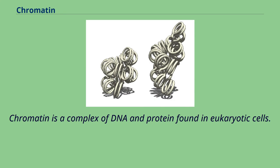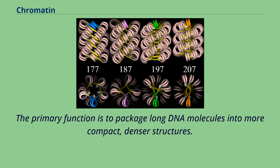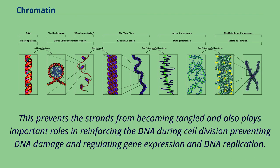Chromatin is a complex of DNA and protein found in eukaryotic cells. The primary function is to package long DNA molecules into more compact, denser structures. This prevents the strands from becoming tangled and also plays important roles in reinforcing the DNA during cell division, preventing DNA damage, and regulating gene expression and DNA replication.